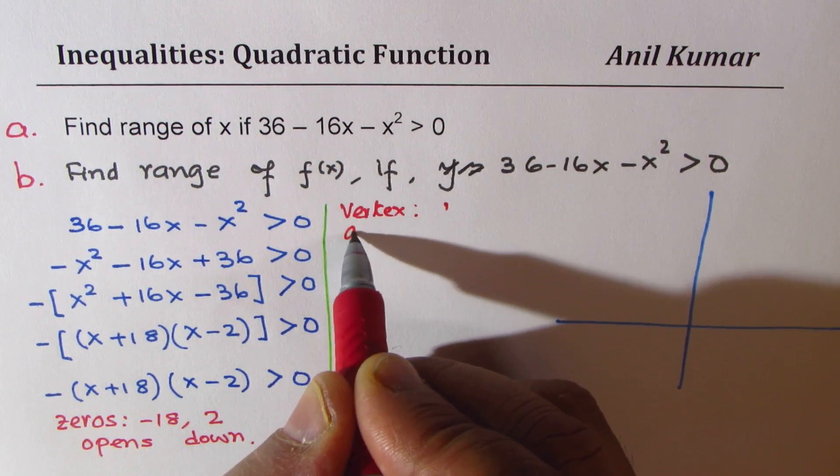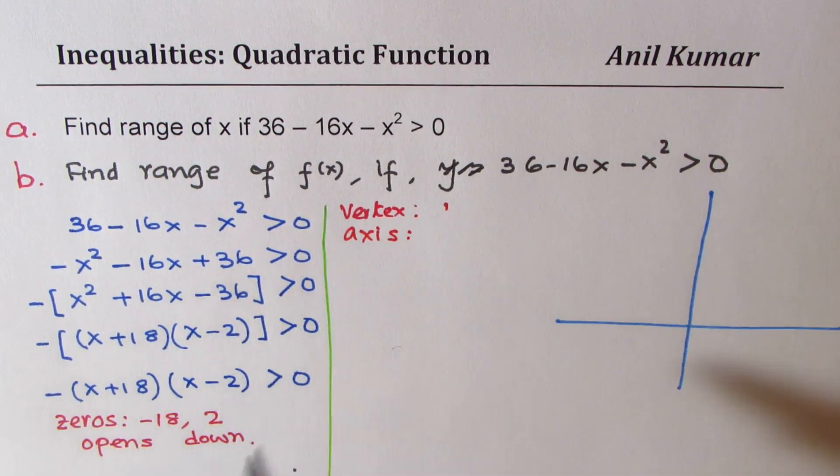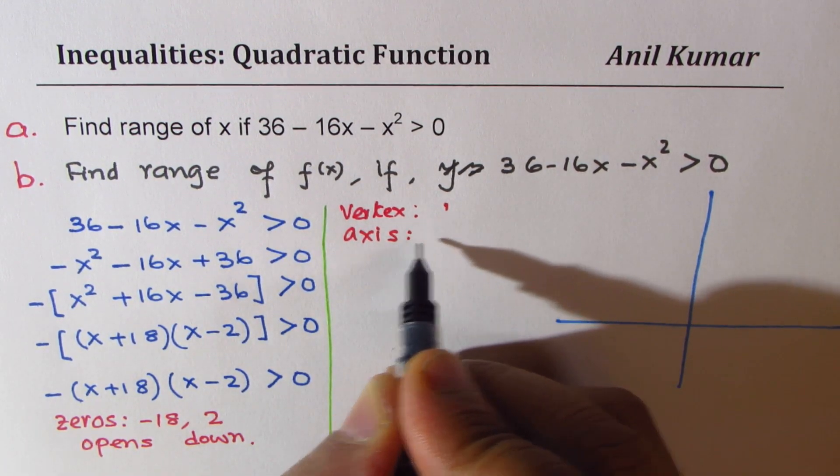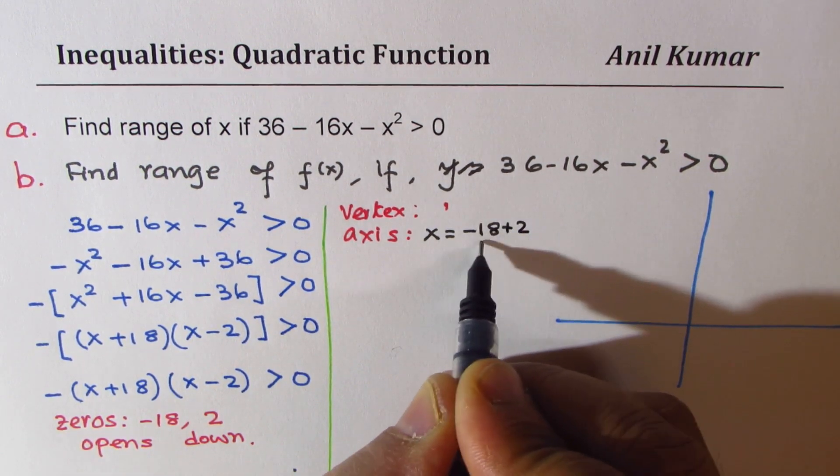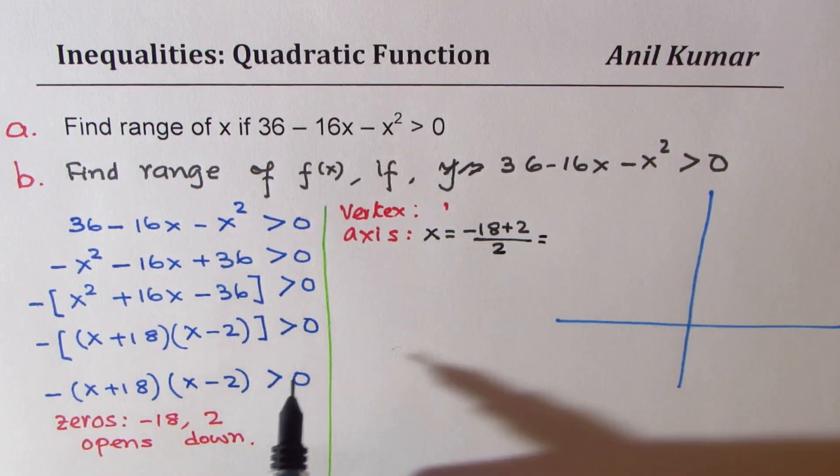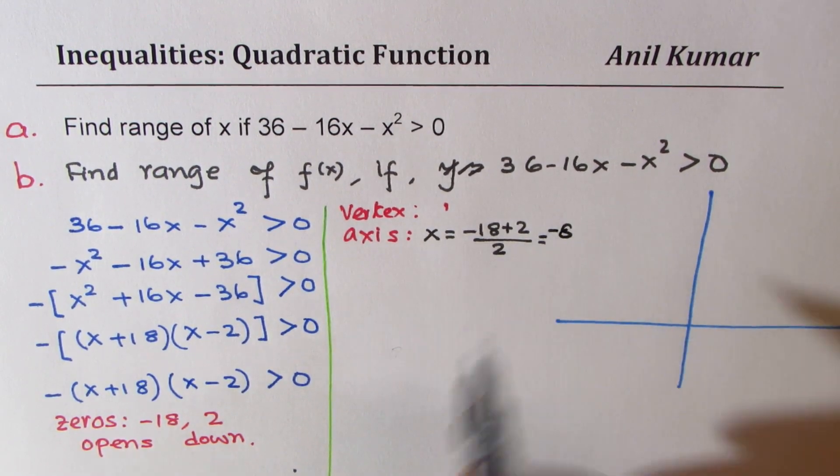So x will be midway. X will be at the zeros divided by 2. So x equals minus 18 plus 2, divide by 2, which gives us minus 8.